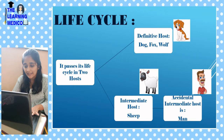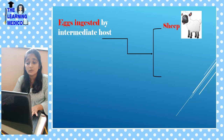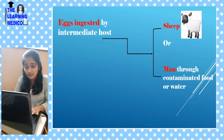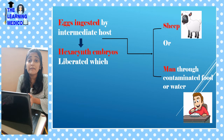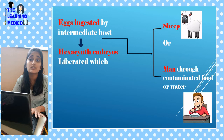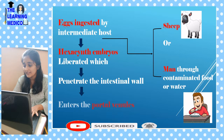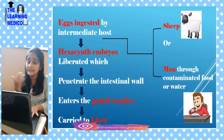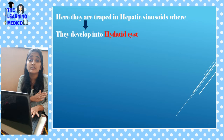In the life cycle, eggs are ingested by the intermediate host — sheep — or by the accidental intermediate host, man, through contaminated food or water. The hexacanth embryo, which has six hooks, is released. It penetrates the intestinal wall of sheep or man, enters the portal venous system, passes through the liver, and is trapped in the hepatic sinusoids, where it develops into the hydatid cyst.